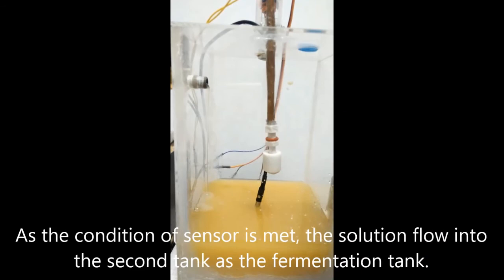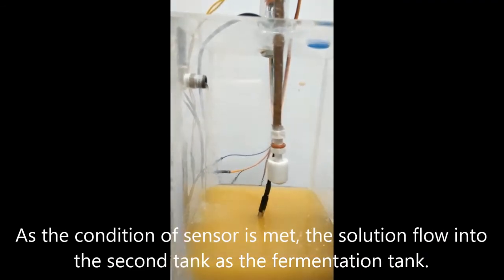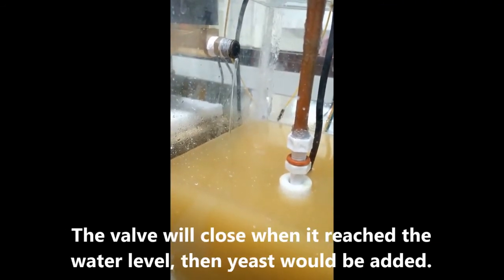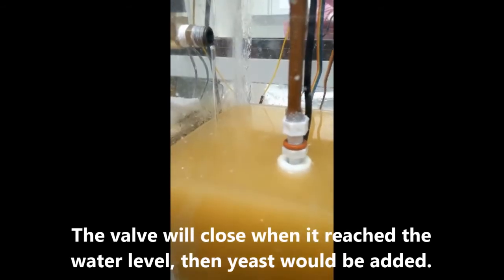As the sensor condition is met, the solution flows into the fermentation tank. The valve will close when it reaches the water level, then yeast is added.